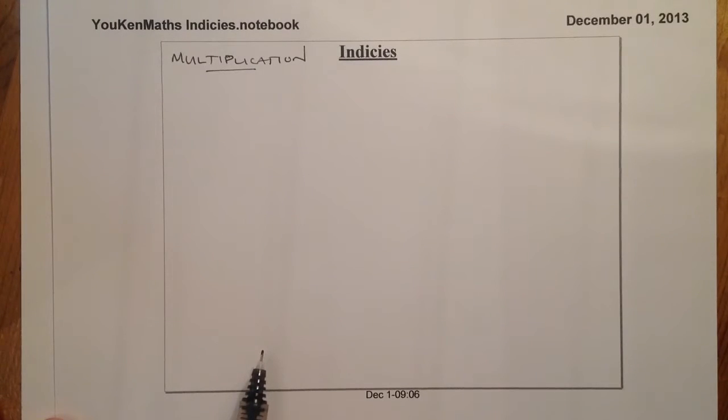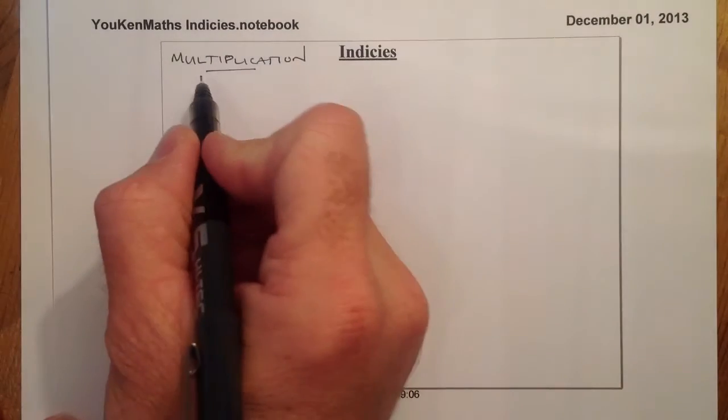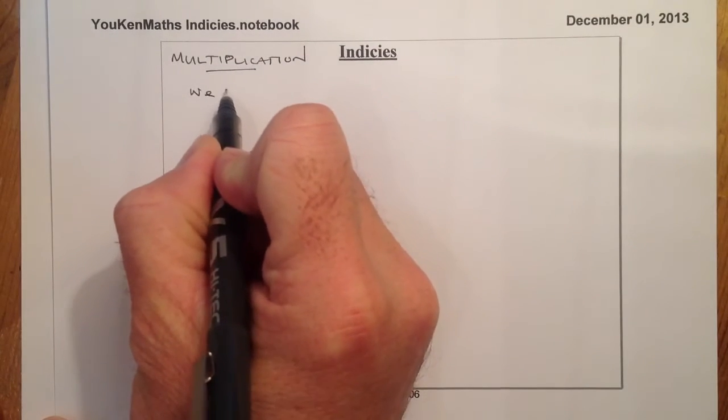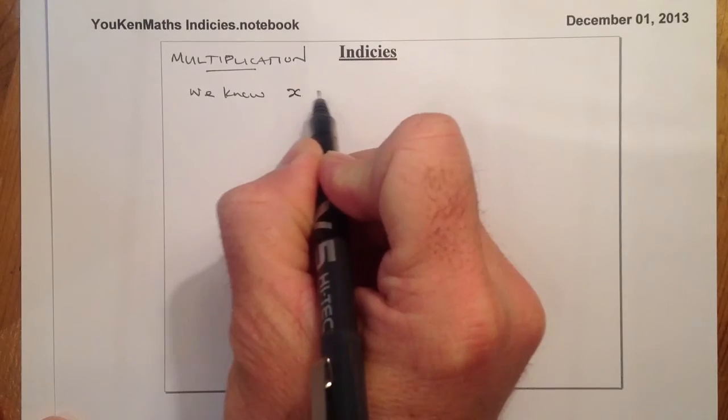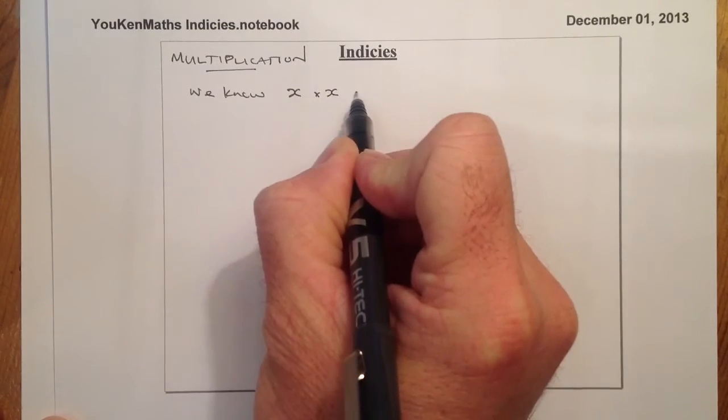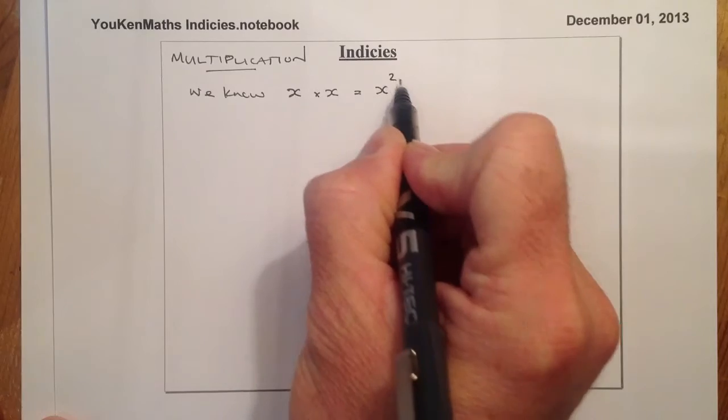Today we're going to look at indices and we're going to be looking at multiplication. The first thing that we can assume to know is that x times x is equal to x squared.